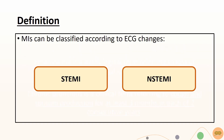MIs can be classified according to ECG changes. STEMI is generally caused by complete and persisting blockage of the artery, while non-STEMI reflects partial or intermittent blockage of the artery.